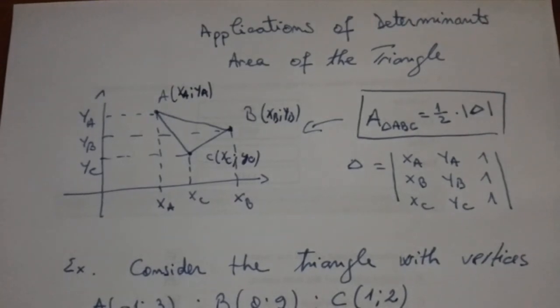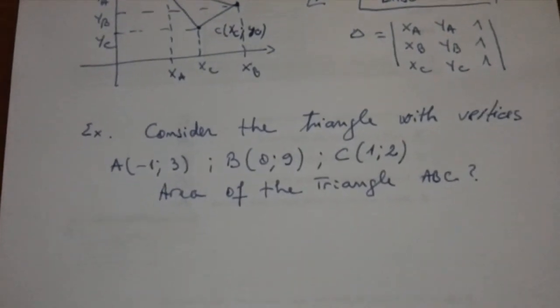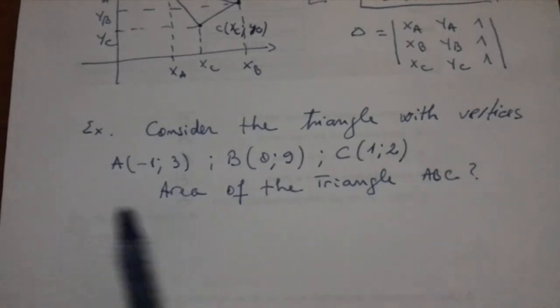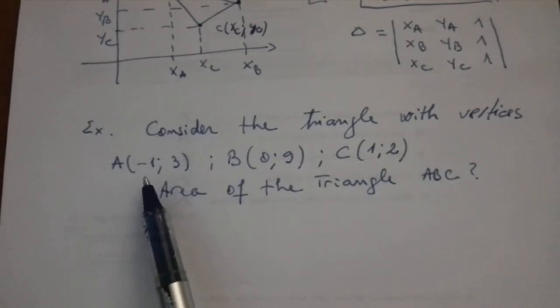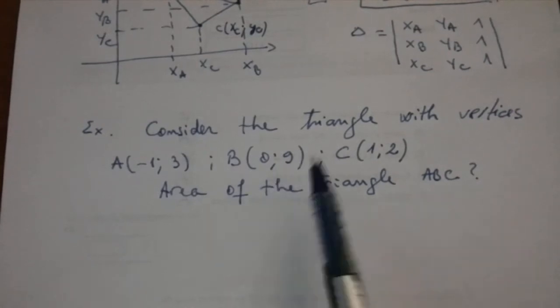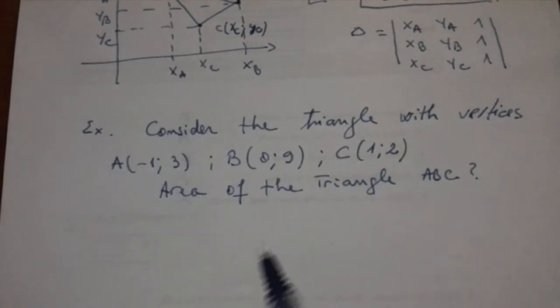Here's an example: consider the triangle with vertices A(-1,3), B(0,9), C(1,2), and we must calculate the area of triangle ABC.